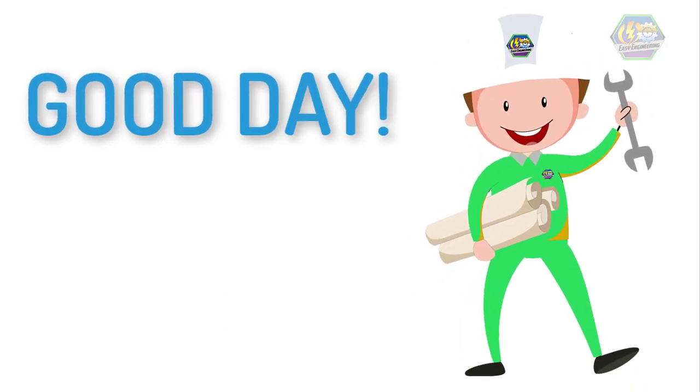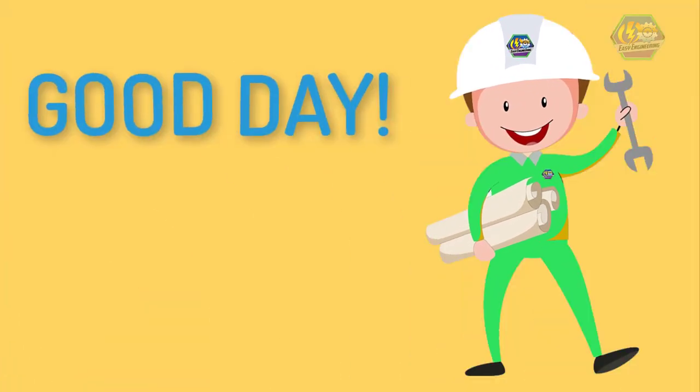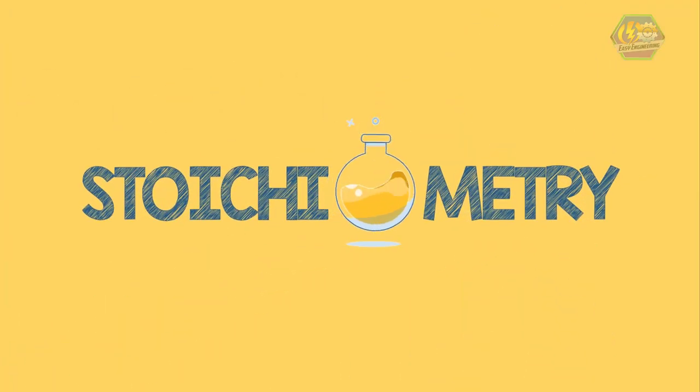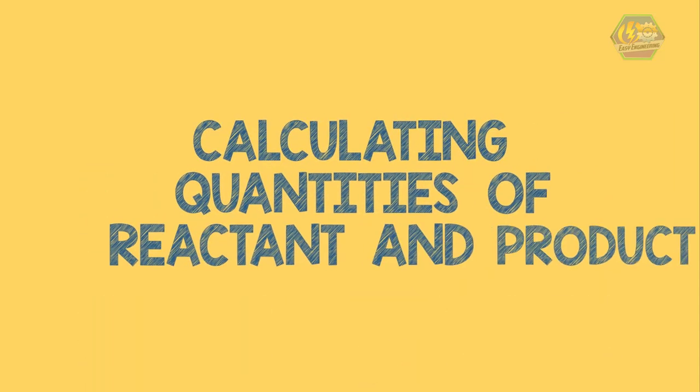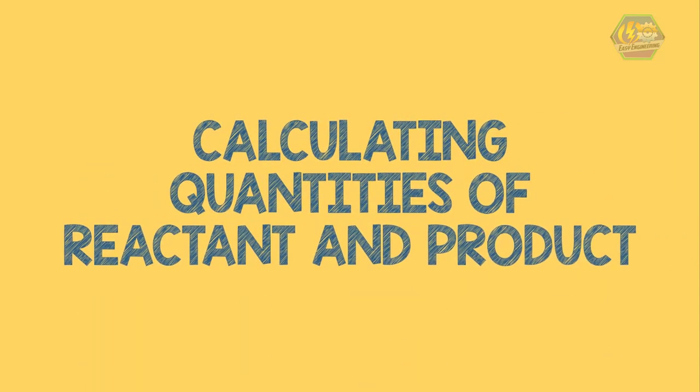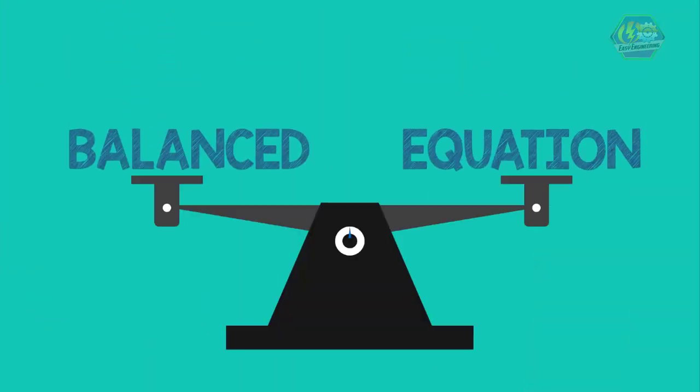Good day learners, this is Easy Engineering. This time we're going to talk about stoichiometry: calculating quantities of reactant and product. A balance equation is essential for all calculations involving chemical change. In a balanced equation, the amounts of substances are stoichiometrically equivalent to each other.